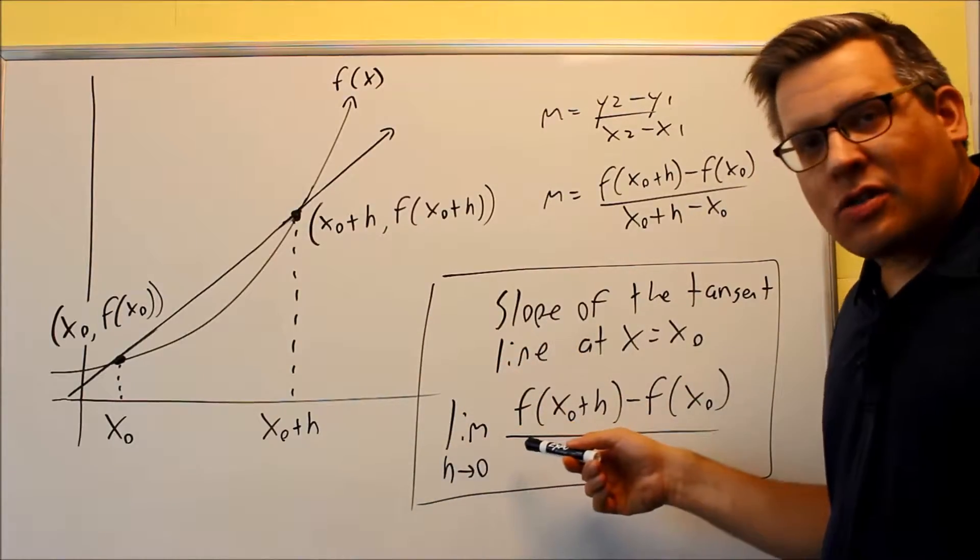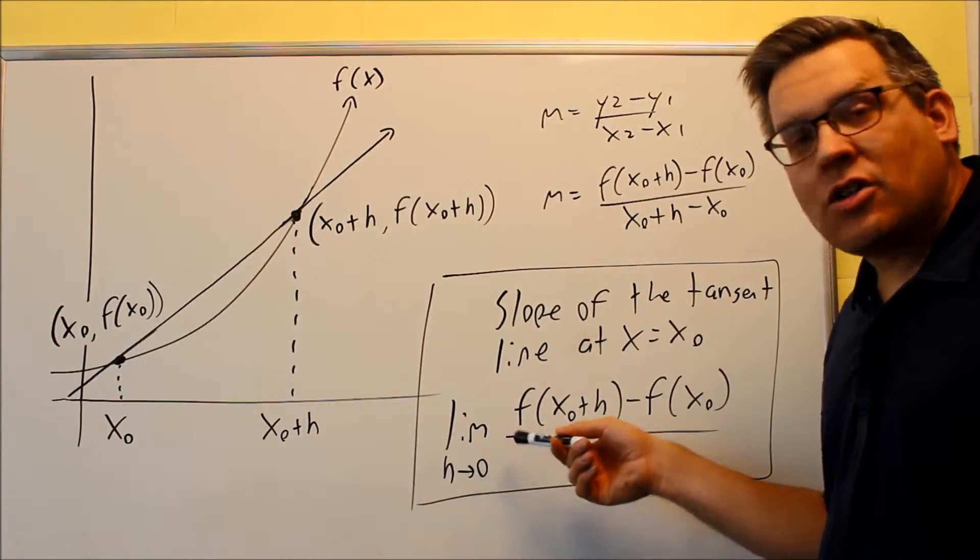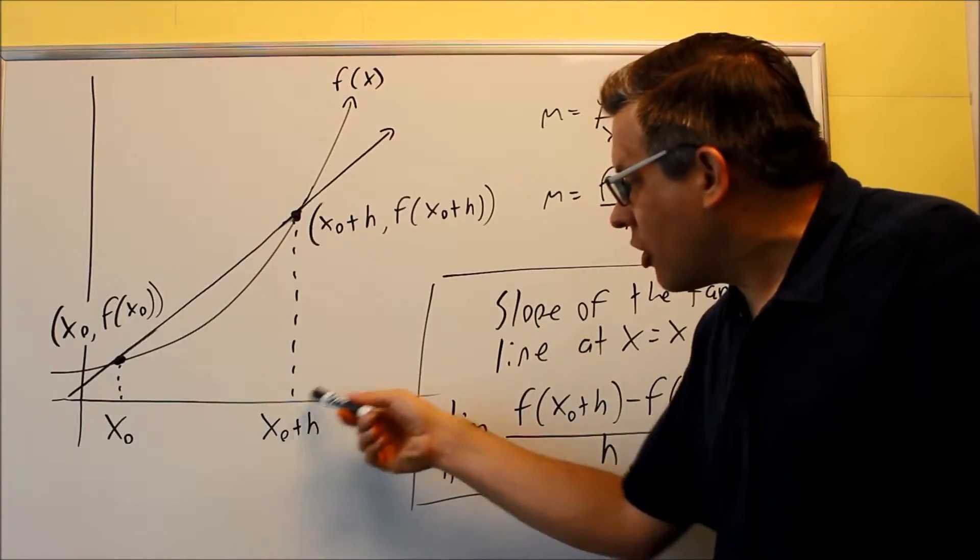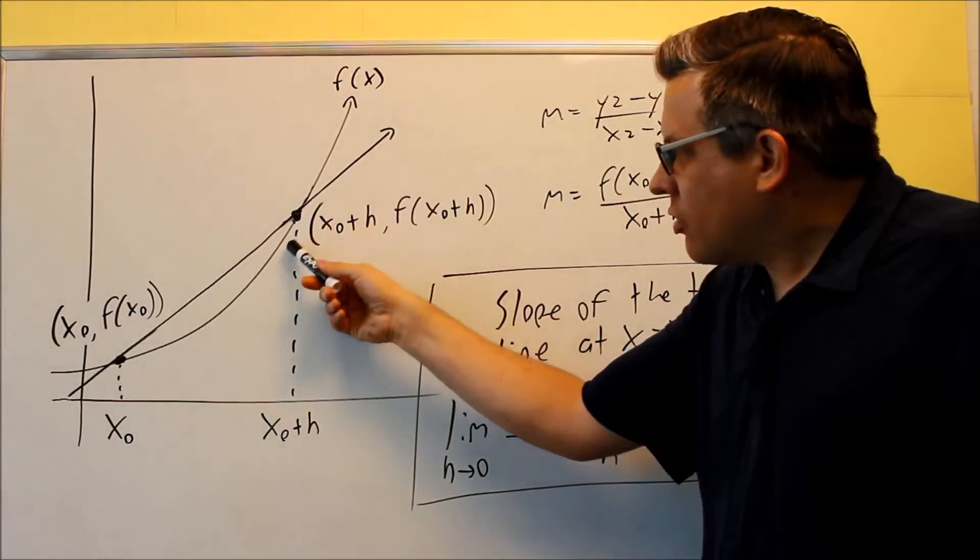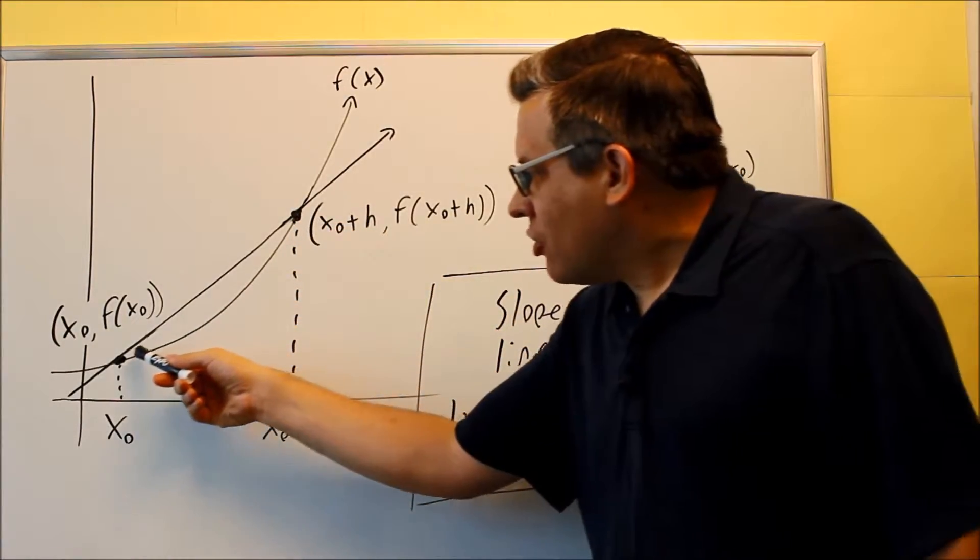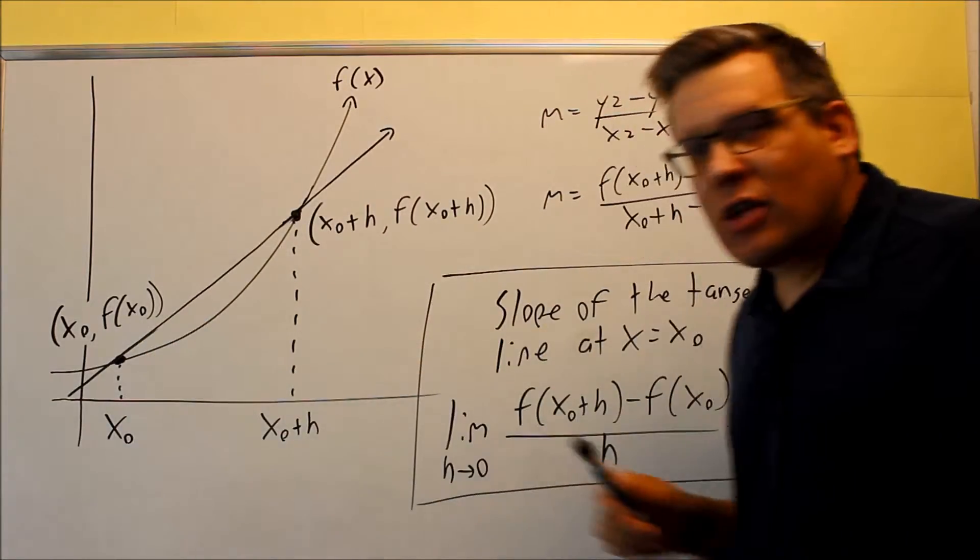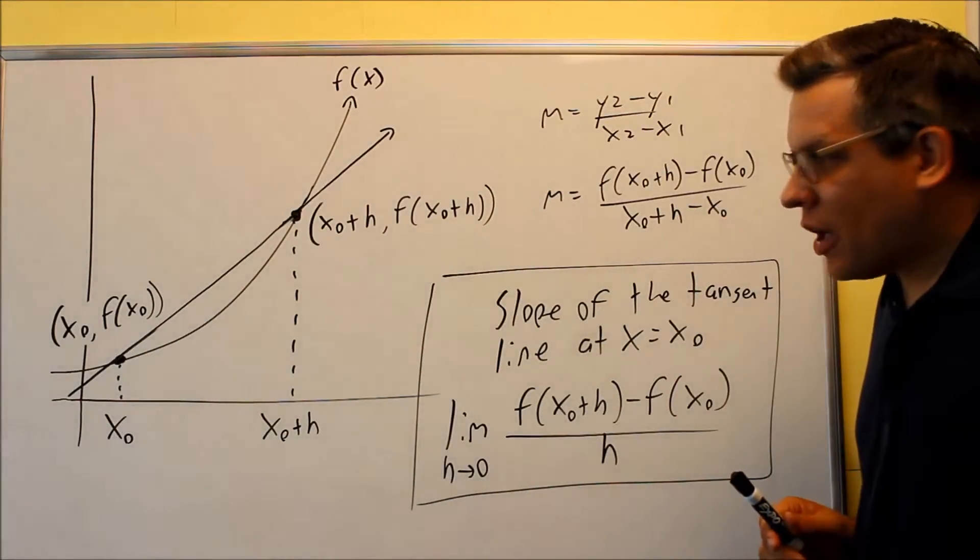So what we're going to do, we're going to minimize the distance between those, so that's why we have h going to zero. That's the increment here. This is going to get closer and closer and closer to where the two points will be right on top of each other, and then that's going to end up giving us the exact value for the slope at x sub zero.